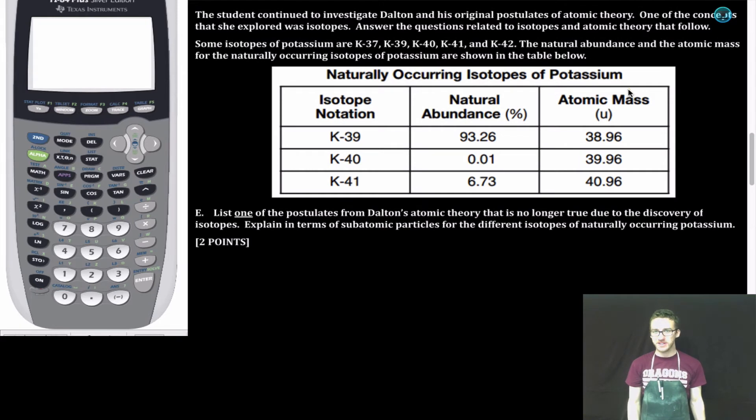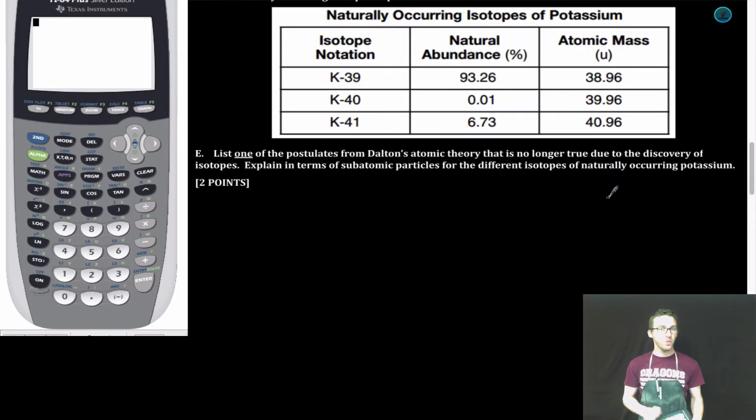The student continued to investigate Dalton and his original postulates of atomic theory. One of the concepts that she explored was isotopes. Some isotopes of potassium are potassium-37, potassium-39, potassium-40, potassium-41, and potassium-42. The natural abundance and the atomic mass for the naturally occurring isotopes of potassium are shown in the table below. Part E. List one of the postulates from Dalton's atomic theory that is no longer true due to the discovery of isotopes. Explain in terms of subatomic particles for the different isotopes of naturally occurring potassium.